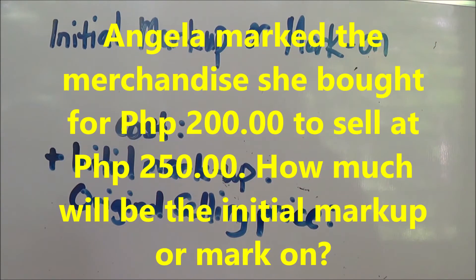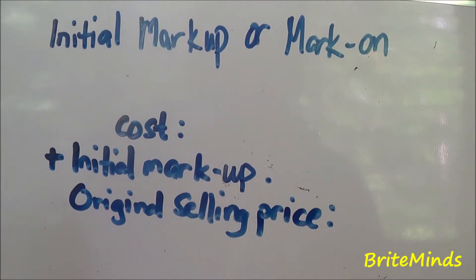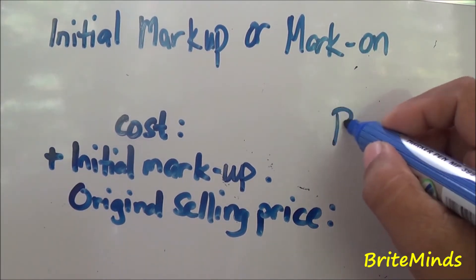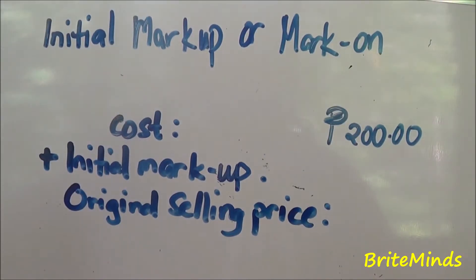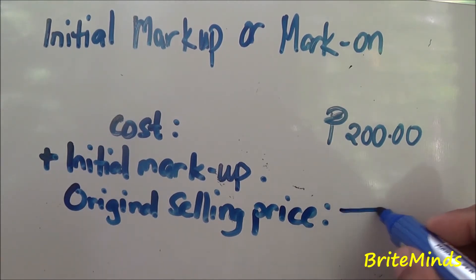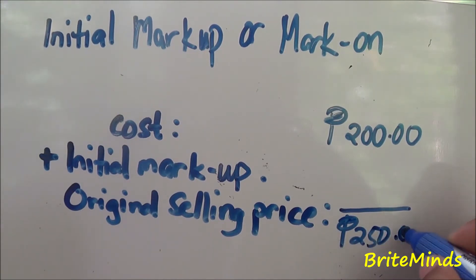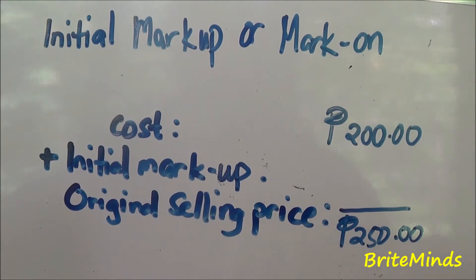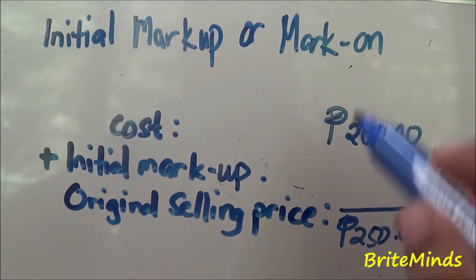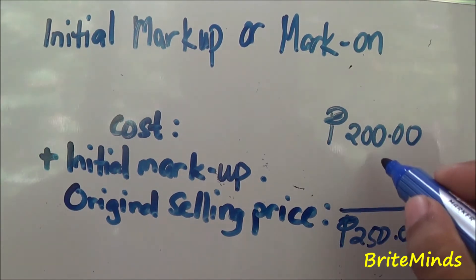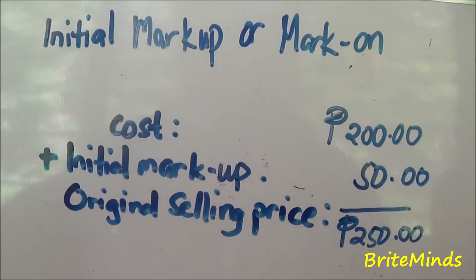Here is an example: Angela marked the merchandise she bought for 200 pesos to sell at 250 pesos. The cost of the merchandise is 200 pesos, and Angela intends to sell it at 250 pesos, which is the original selling price. The initial mark-up equals the original selling price less the cost: 250 minus 200 equals 50 pesos.